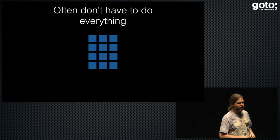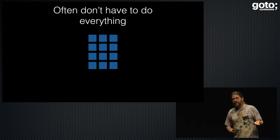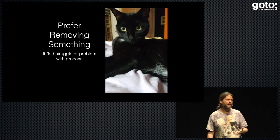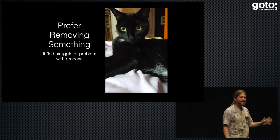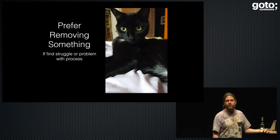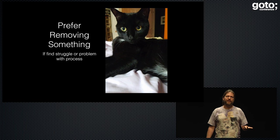This is an example of one of my usual principles: when I find a problem with my process, when I find something I'm struggling with, my default answer is to remove something from my process. We were having problems with estimation, so we said let's remove that specific thing and replace it with something else we were already doing — working on cards. Can we get the same value by adjusting something we already do?